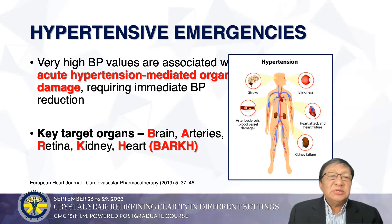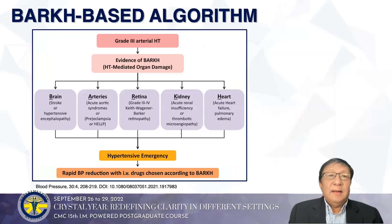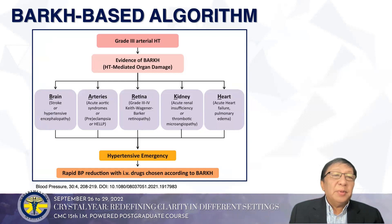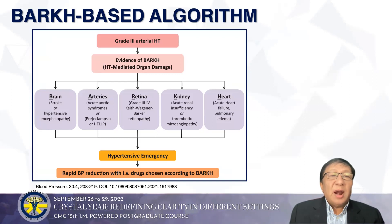BARC stands for the Brain, the Arteries, Retina, and Kidney, and the Heart. Because of grade 3 arterial hypertension, there will be evidence of hypertension-mediated organ damage, especially in the brain, where you can have a stroke or hypertensive encephalopathy.